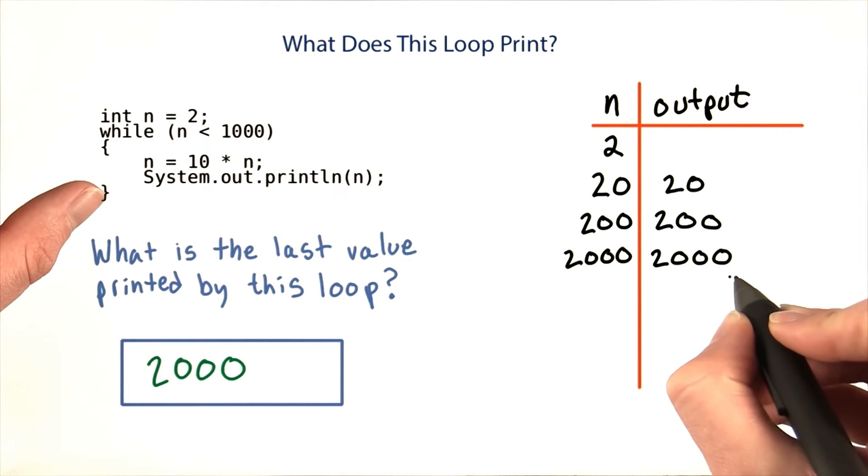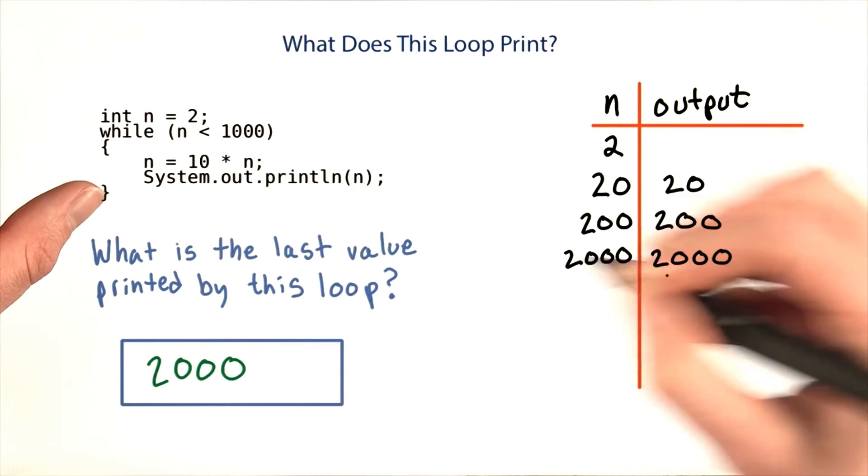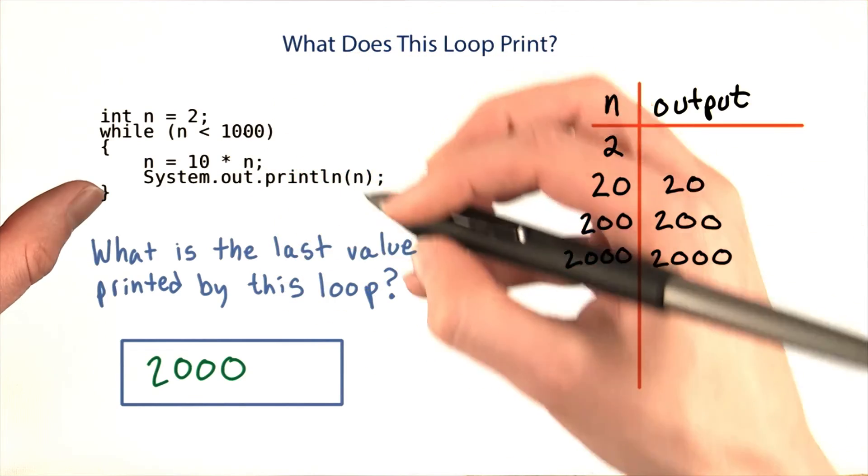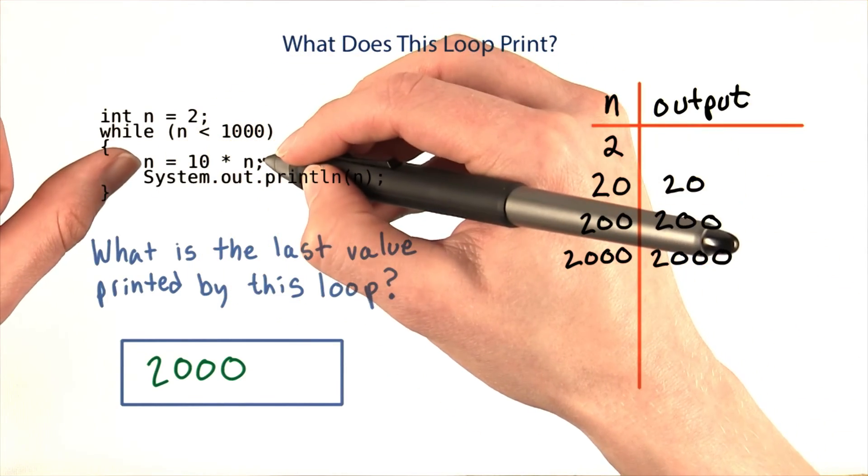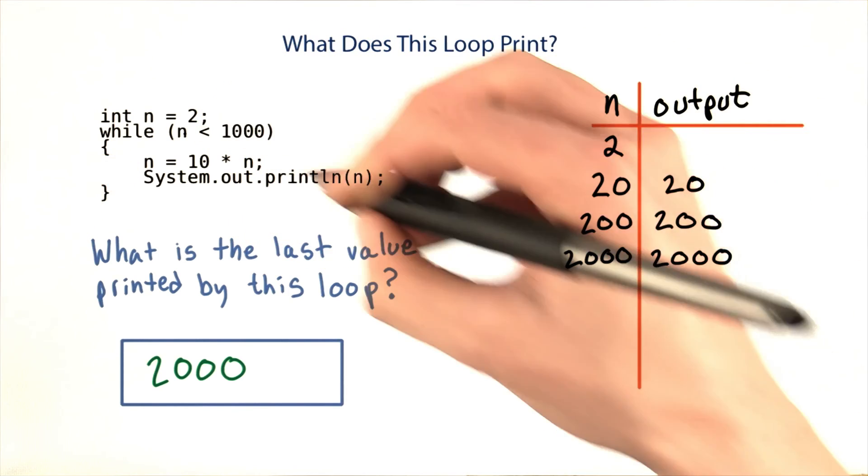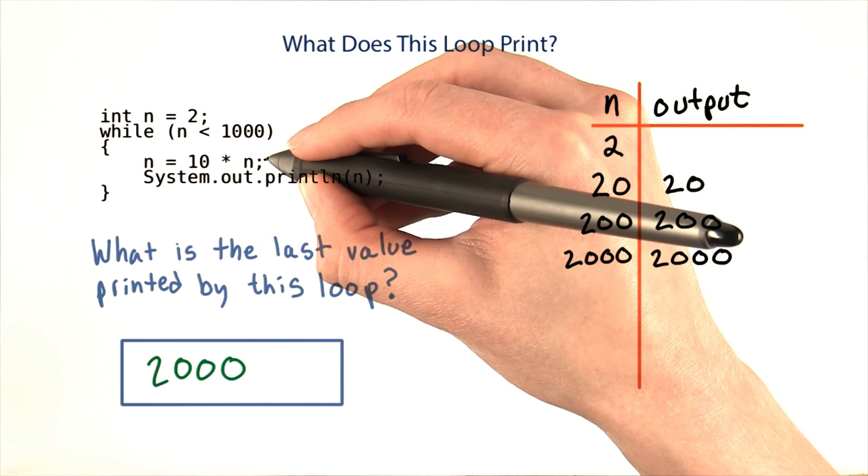It looks like the last thing that was printed was 2,000. And we managed to print a larger value of n than 1,000, because the print statement comes after we update the loop variable. It matters when we update n inside the body of the loop.